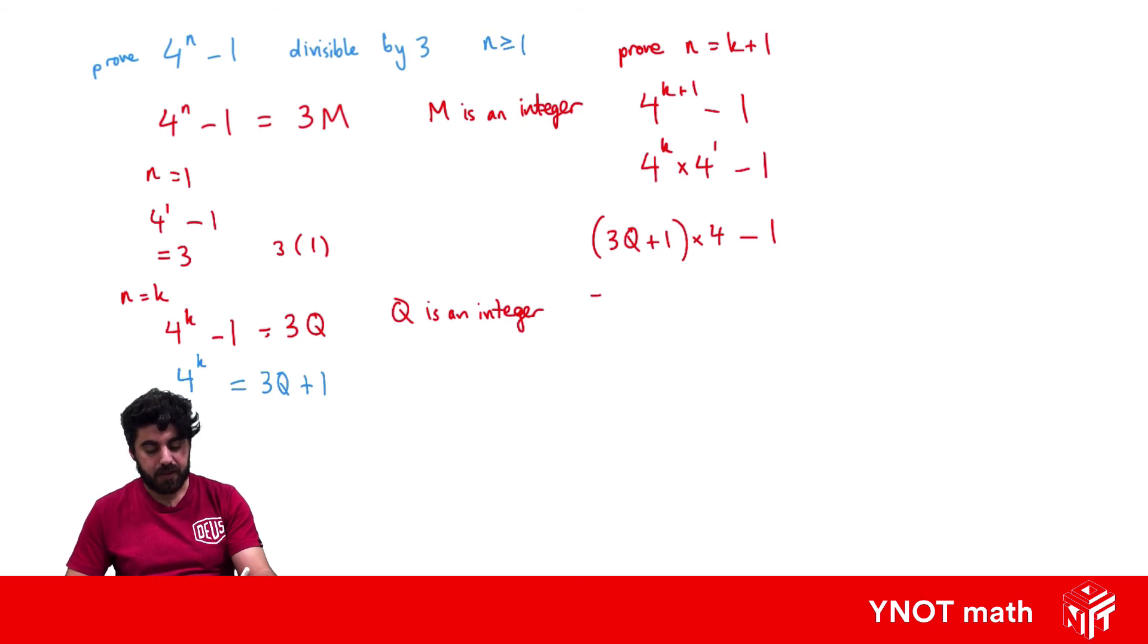And let's go ahead and expand that. So we're going to get 4 times 3q is 12q. 1 times 4 is 4 minus 1. That's going to give us 12q plus 3.